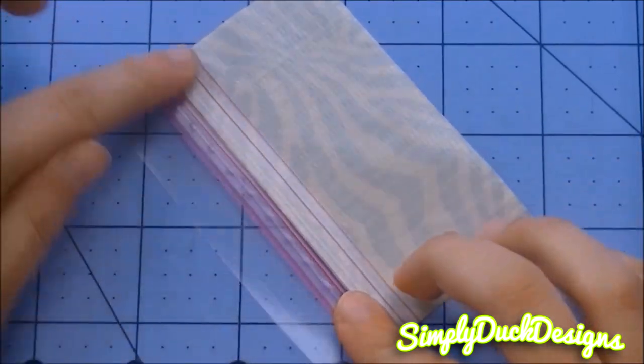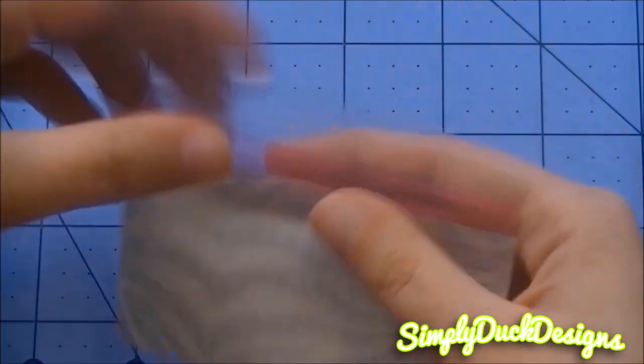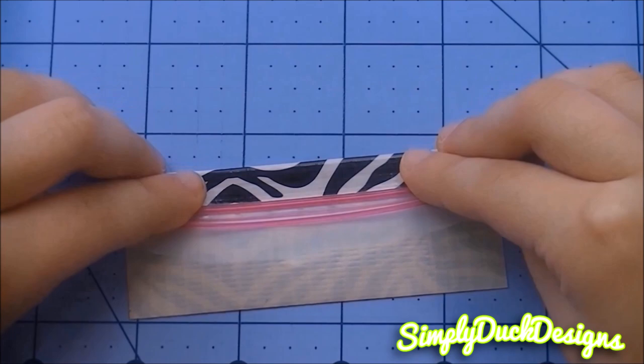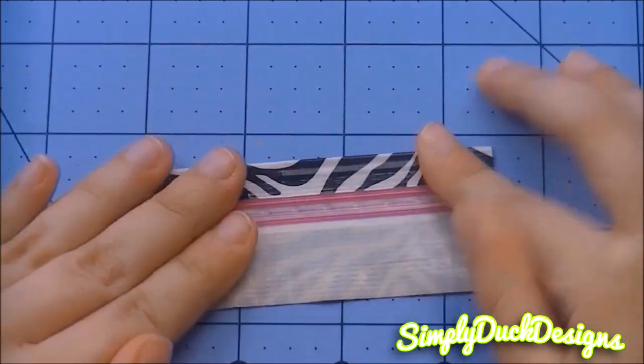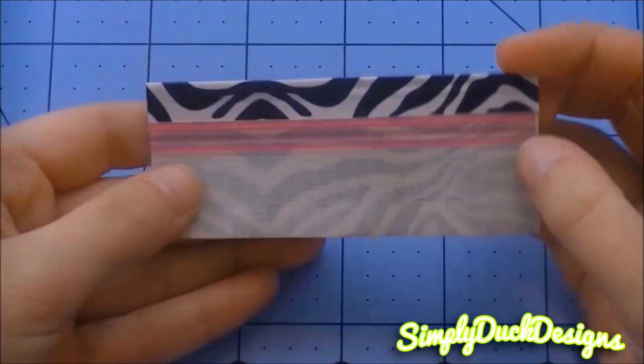Flip it over. I like to smooth it out on this side too, just to make sure it'll stay attached while folding it over. And we're just going to fold that over, like so. Flatten that out. And you're going to do the exact same thing with your next piece.